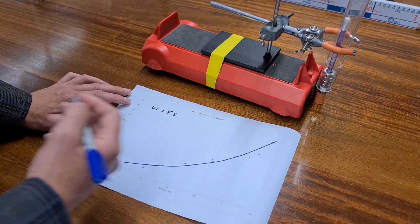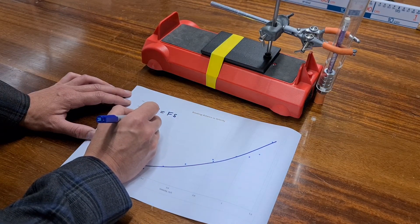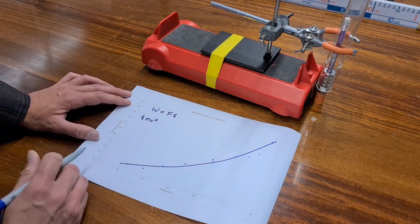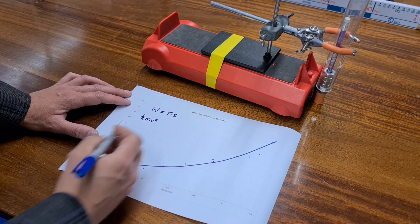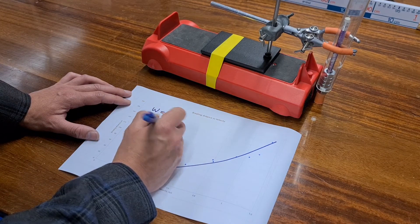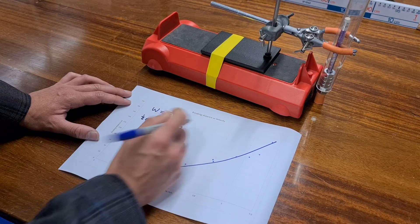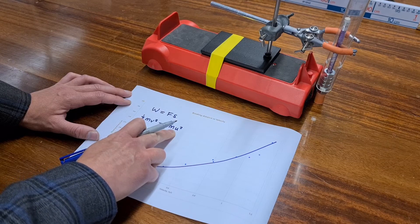But we could write that difference in kinetic energy with the familiar notation that u is the initial velocity and v is the final velocity. So we know that kinetic energy is a half mv squared. And we would write it like this. A half mv squared, that's the kinetic energy representing the final velocity. And that would be zero if it has braked.